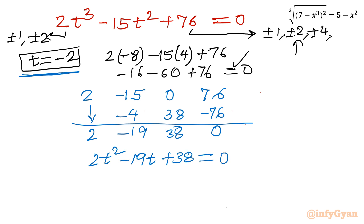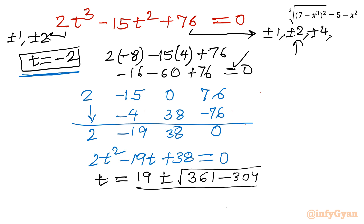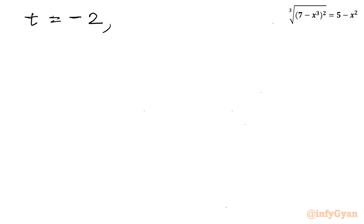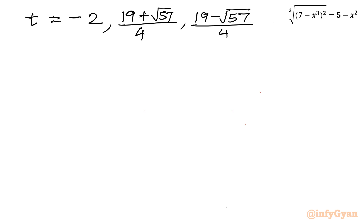Applying the quadratic formula: t equals (19 plus or minus square root of (361 minus 4 times 2 times 38)) divided by 2 times 2, which is 4. That gives square root of (361 minus 304) equals square root of 57. So the three roots of the cubic are: t equals negative 2, t equals (19 plus root 57) over 4, and t equals (19 minus root 57) over 4.